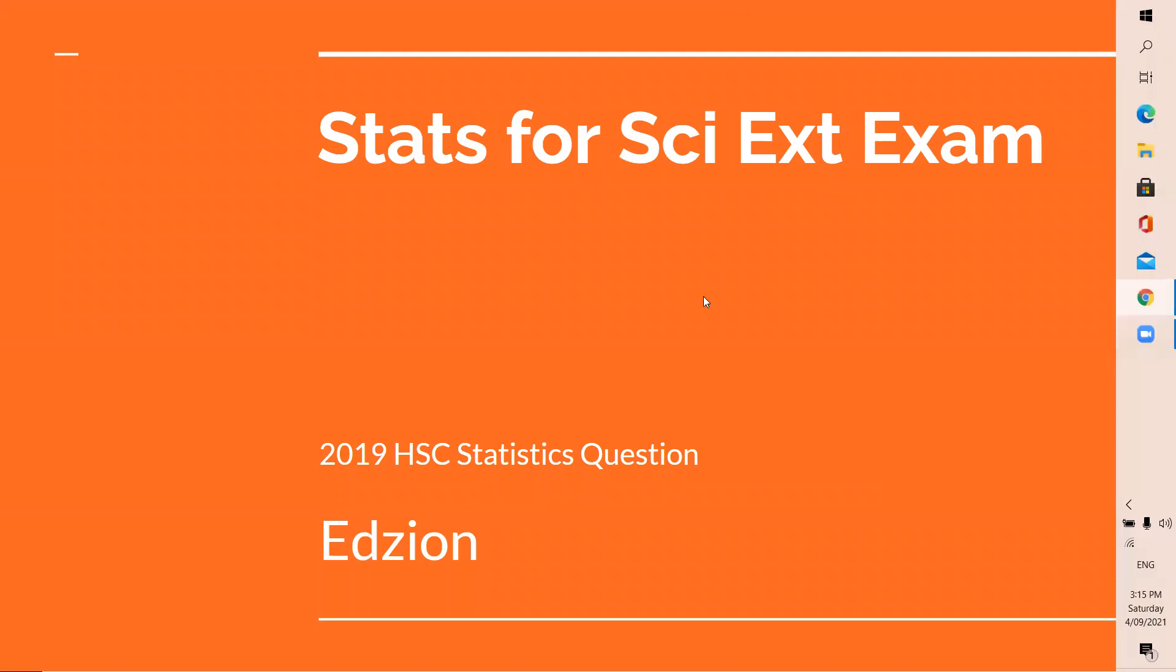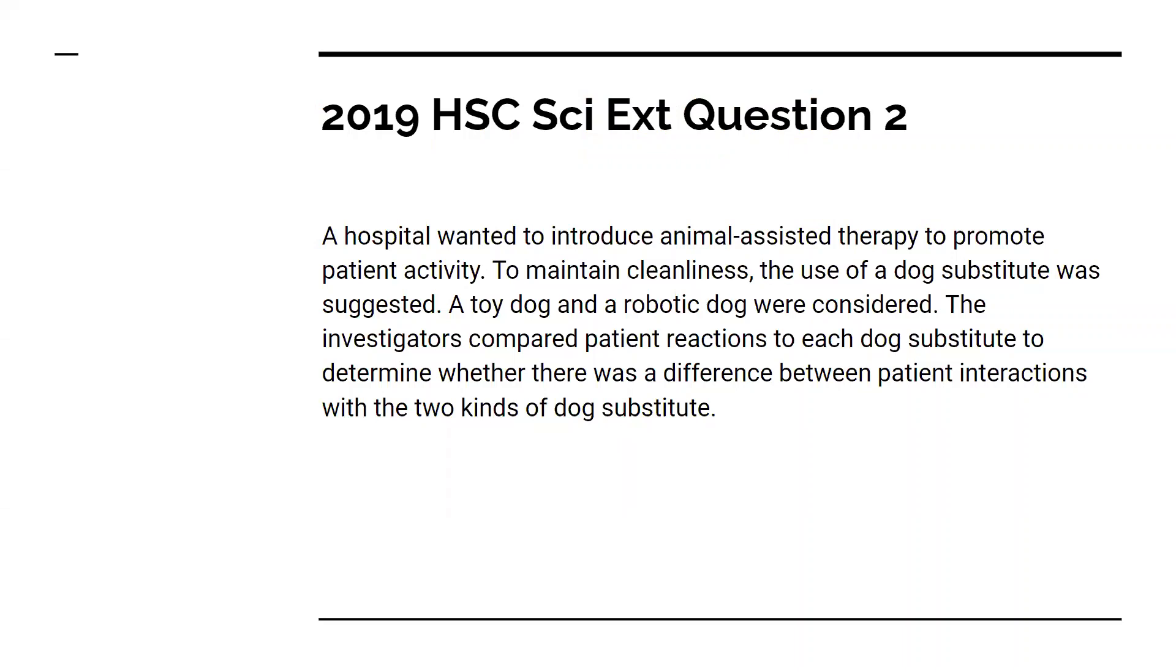We're looking at stats for the Science Extension exam. These are questions from the 2019 HSC paper that included statistics. For our first question, we're looking at a hospital that wanted to test whether their animal-assisted therapy was better when they used a substitute dog or just a normal toy dog. They're comparing a toy dog versus a robotic dog, and we're going to look at the experimental design to test this.